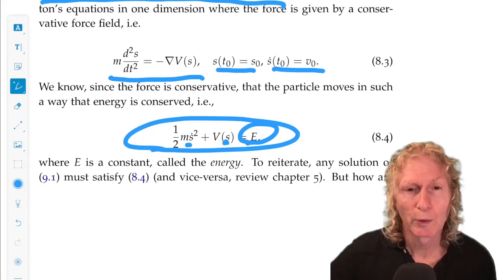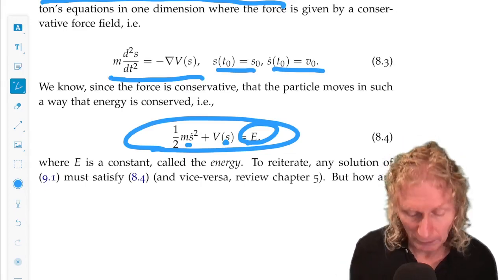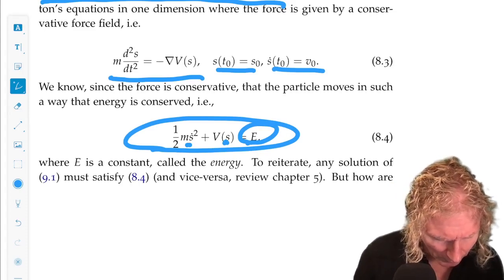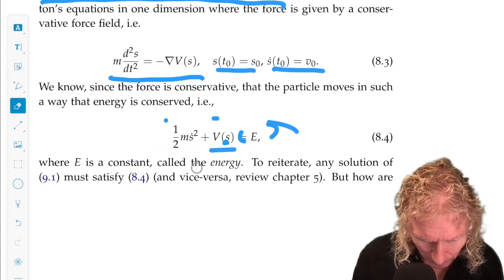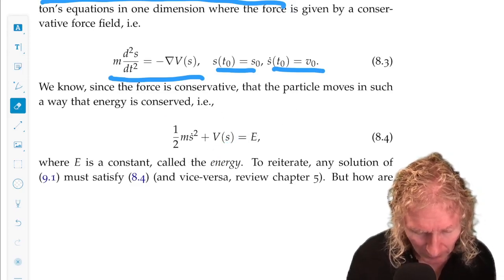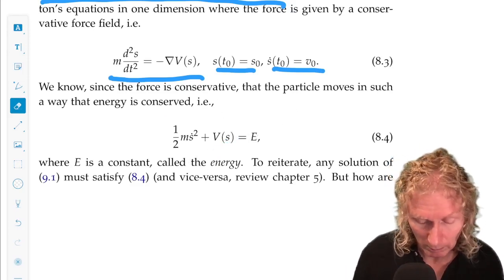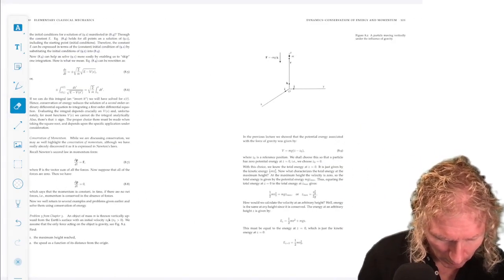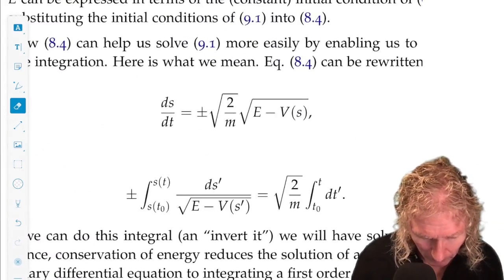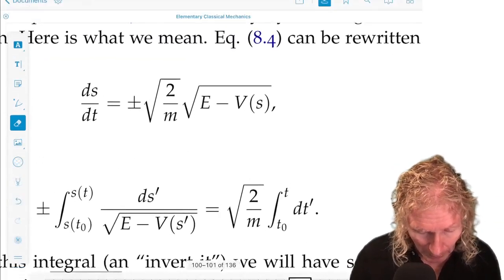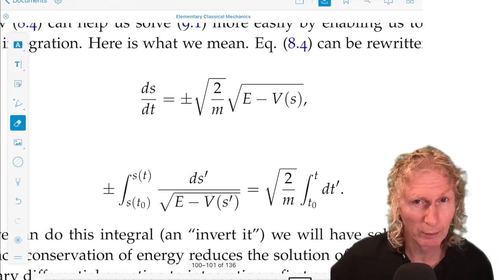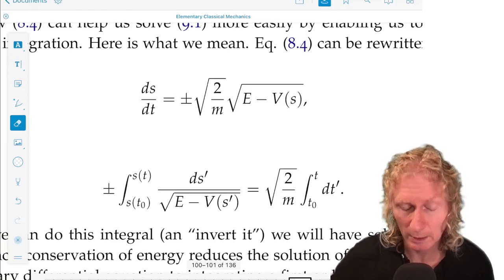A trajectory moves along a constant energy curve. So we could solve for s dot. It's just a quadratic equation. And then we have a plus or minus sign whenever we take a square root, and we need to carefully consider which sign to take.